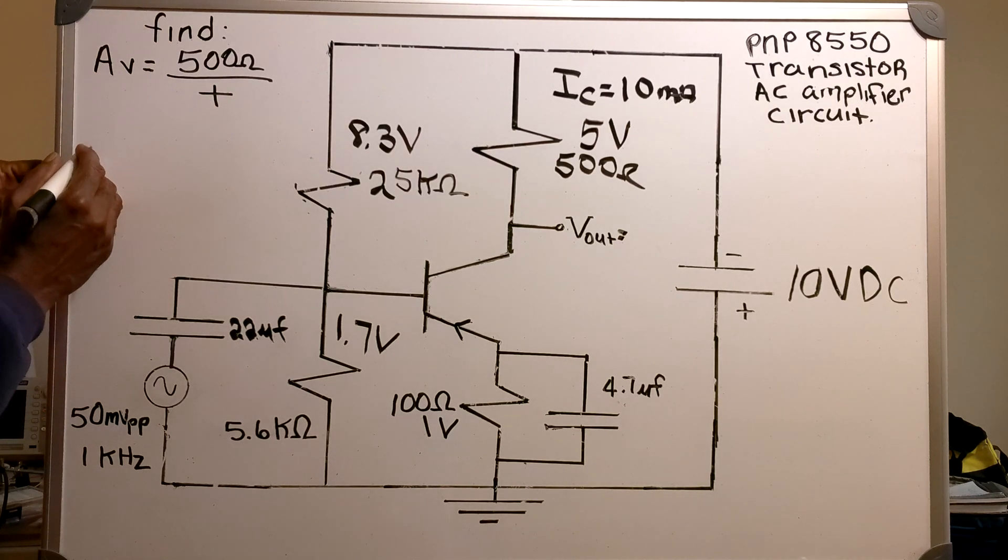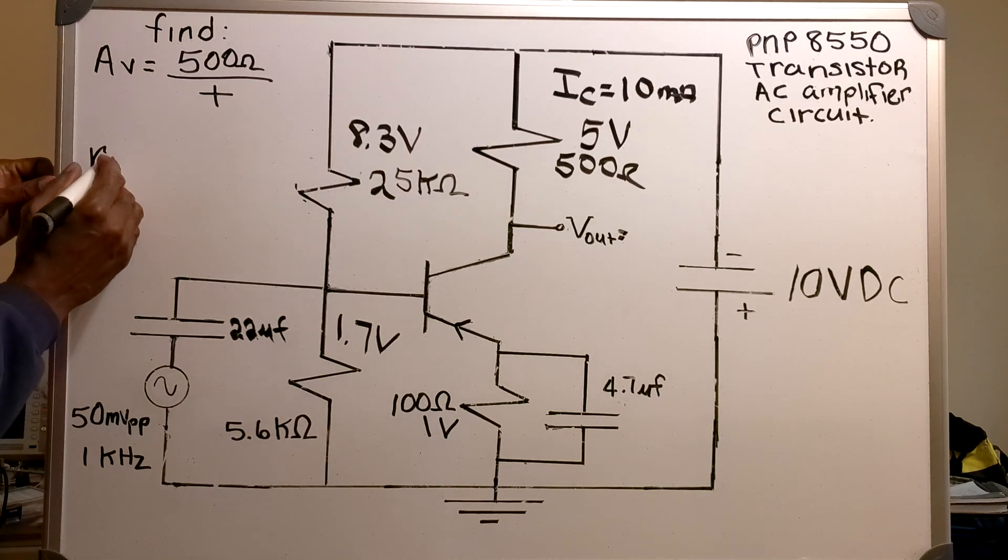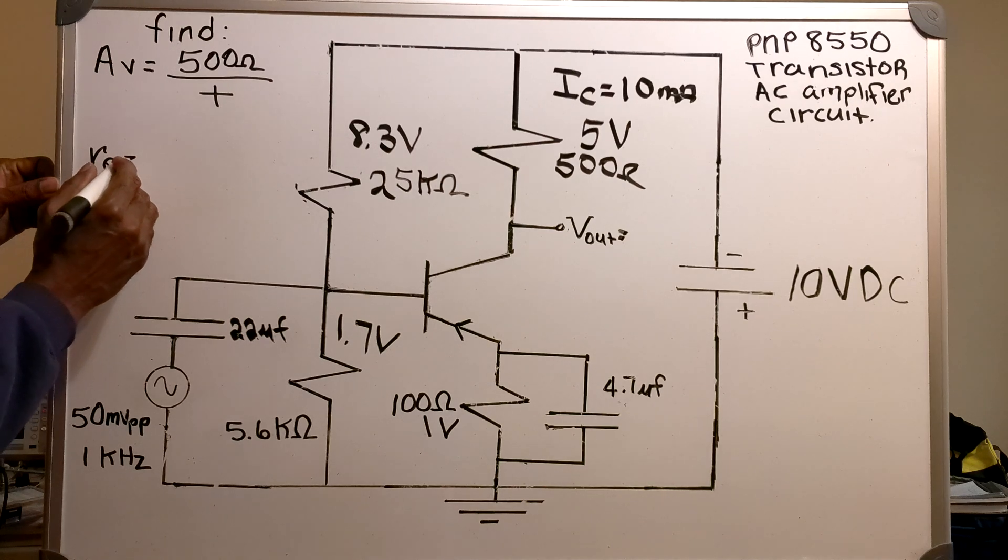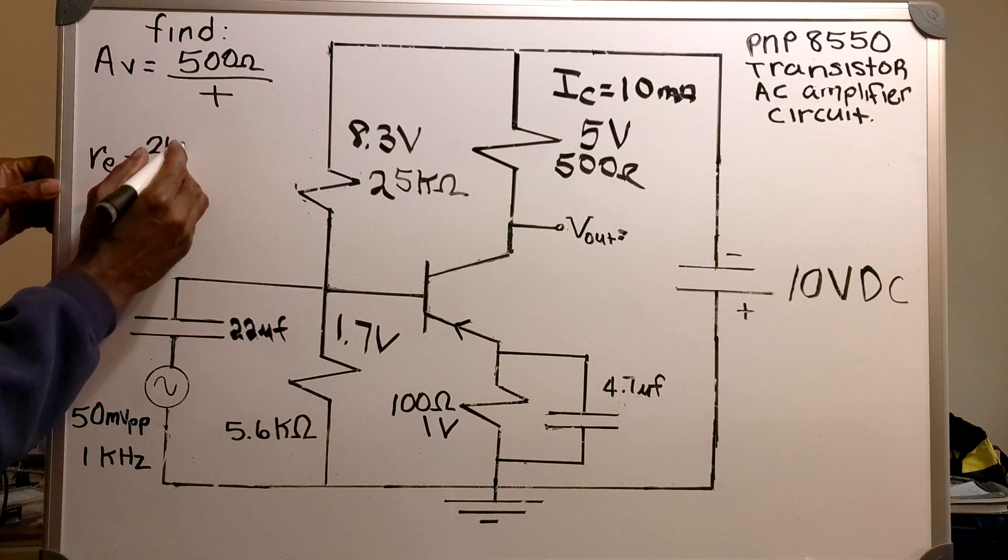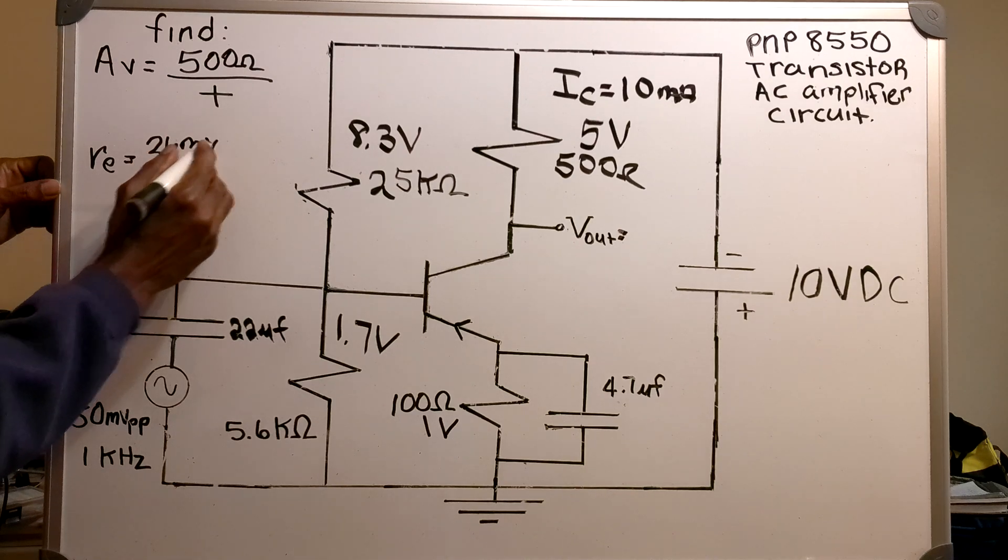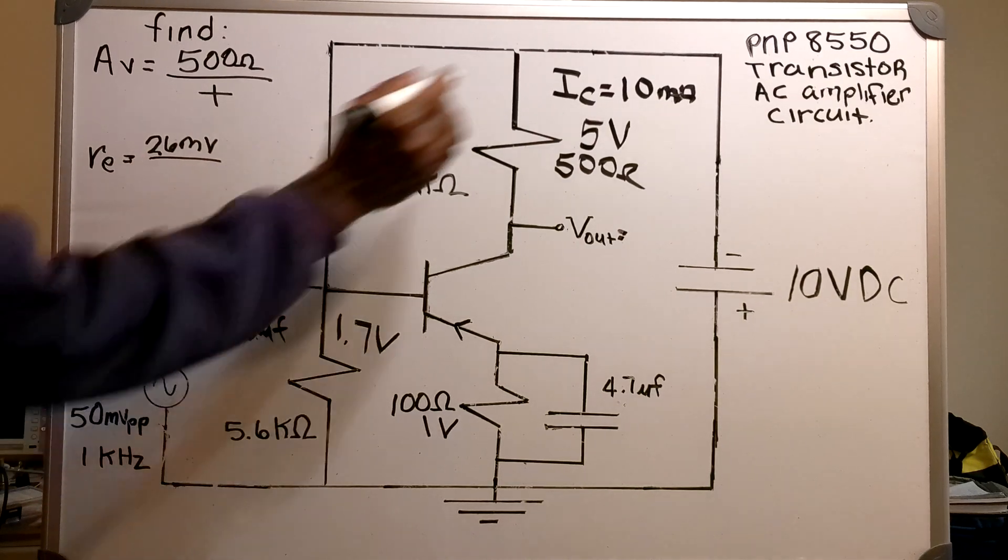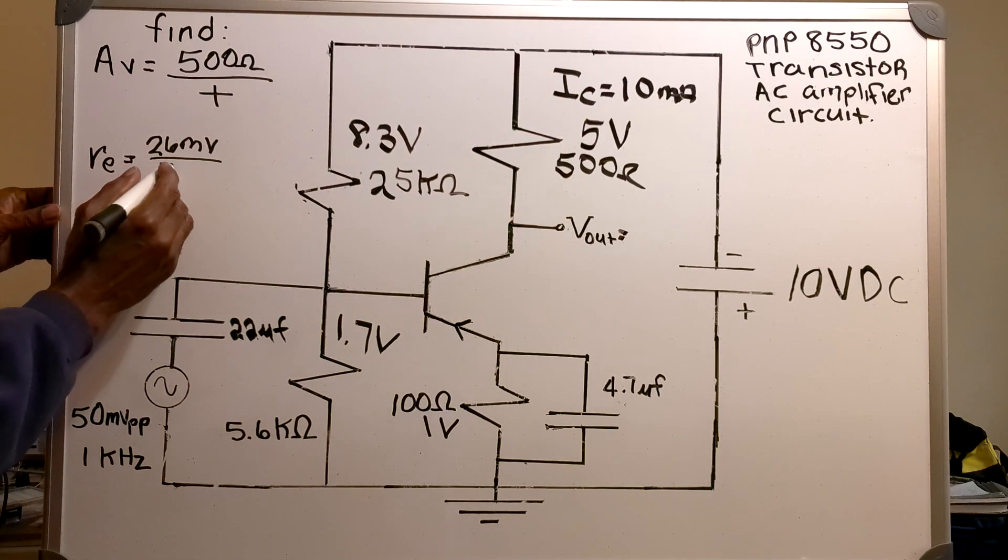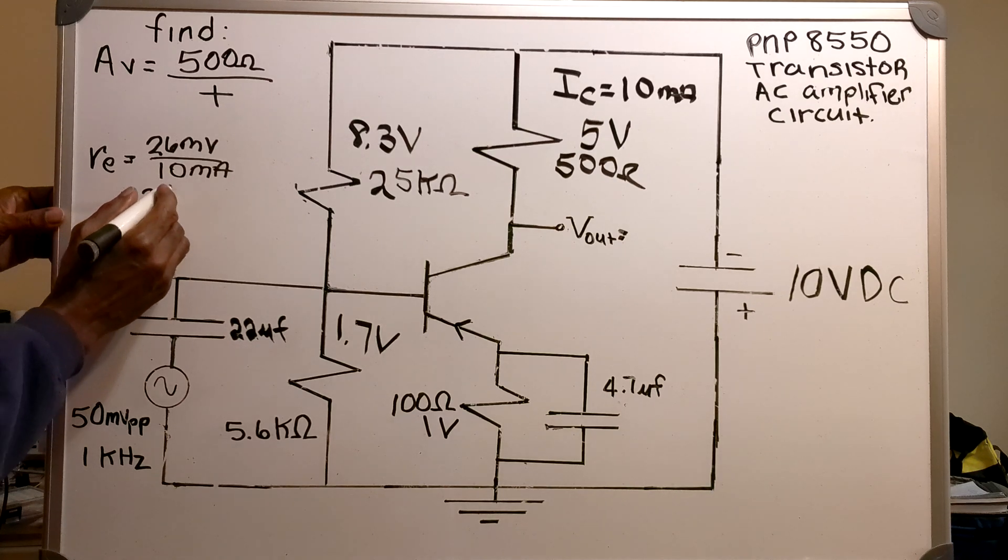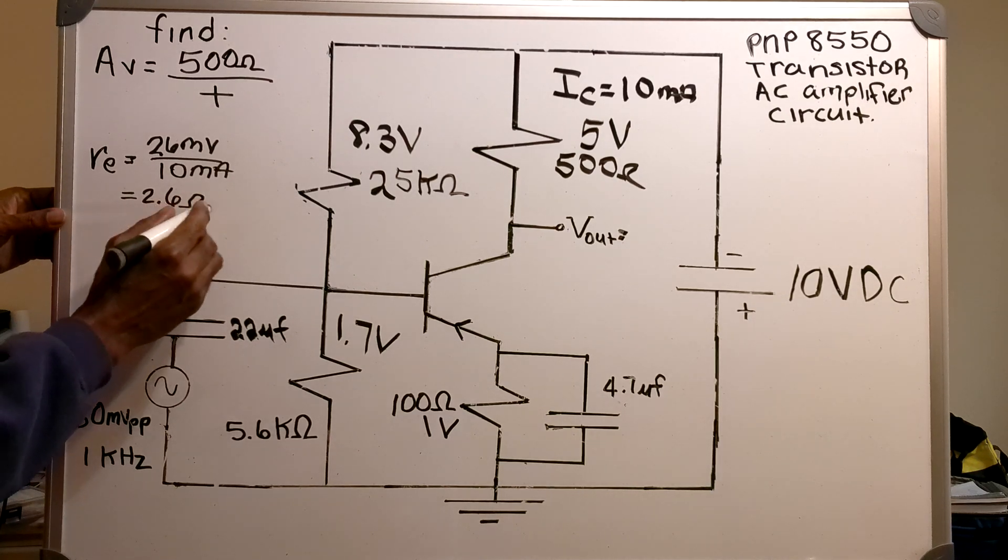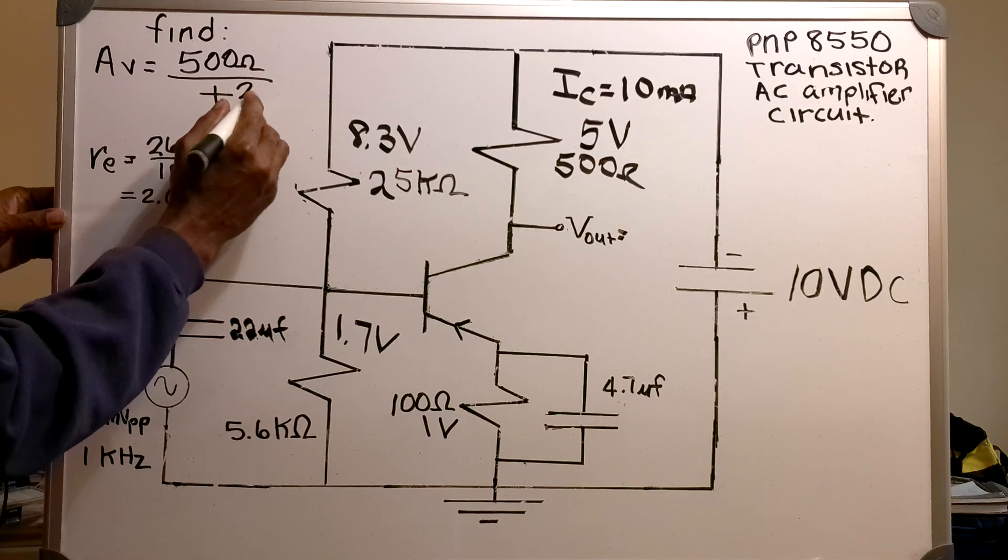The first number I will find is my RE. My RE equals 26 millivolts over my 10 milliamp current. That gives me an RE of 2.6 ohms.